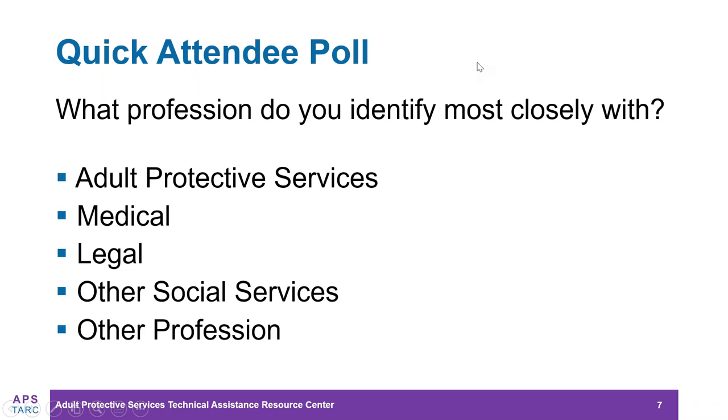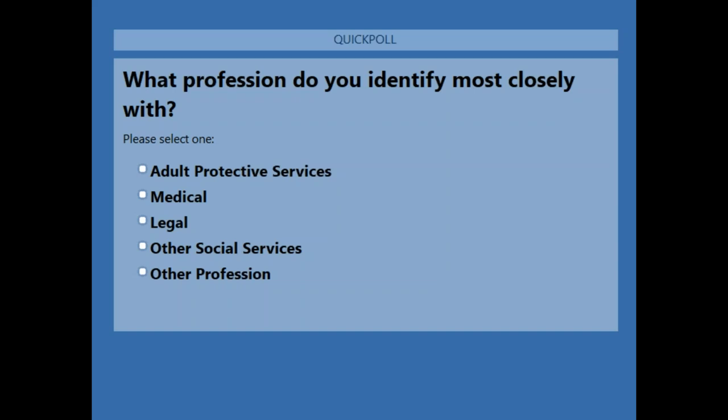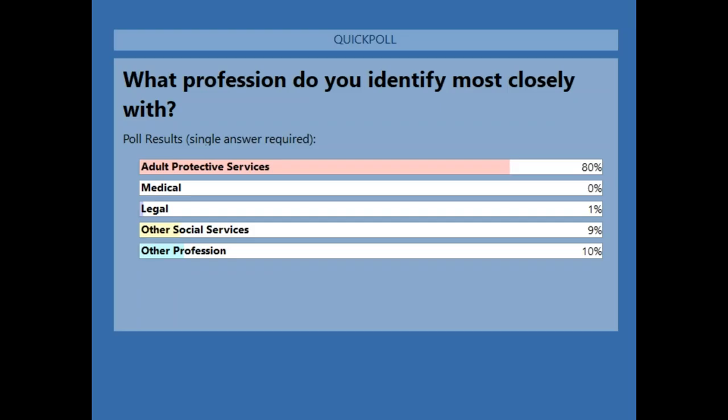Now I'd like to launch a quick attendee poll so we can get a sense of who our audience is today. Our question is: what profession do you identify most closely with? Single choice answer — adult protective services, medical, legal, other social services, or other profession. After closing the poll: 80% adult protective services, 1% legal, 9% other social services, and 10% other professions. Thank you all for taking that.